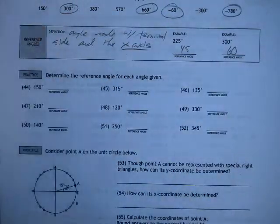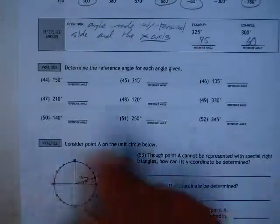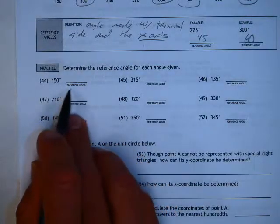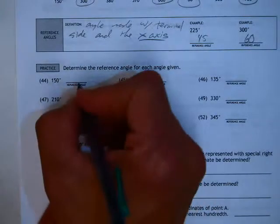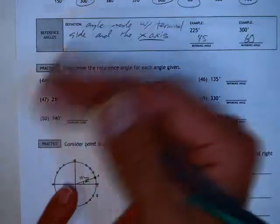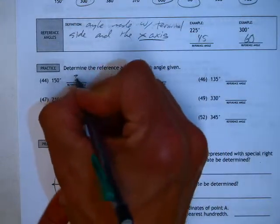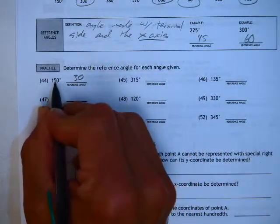So we see some of these problems here. 150 degrees is a short triangle in the second quadrant. A short triangle has a reference angle to the x-axis of 30 degrees because it's 30 degrees away from the 180 degrees on the bottom.